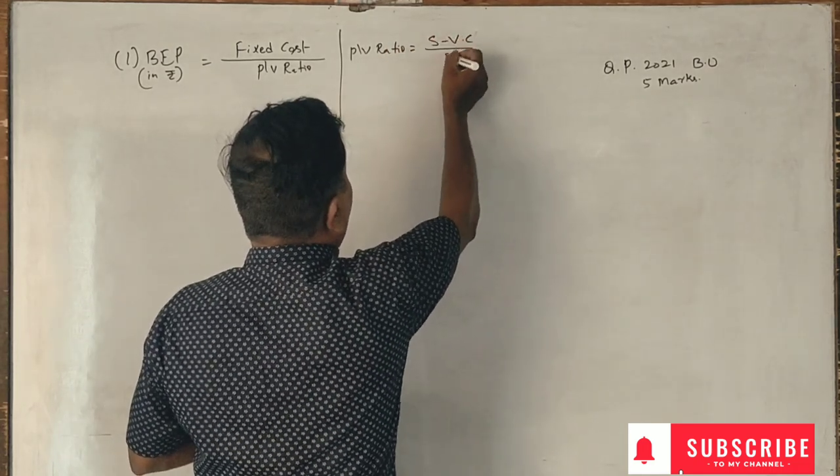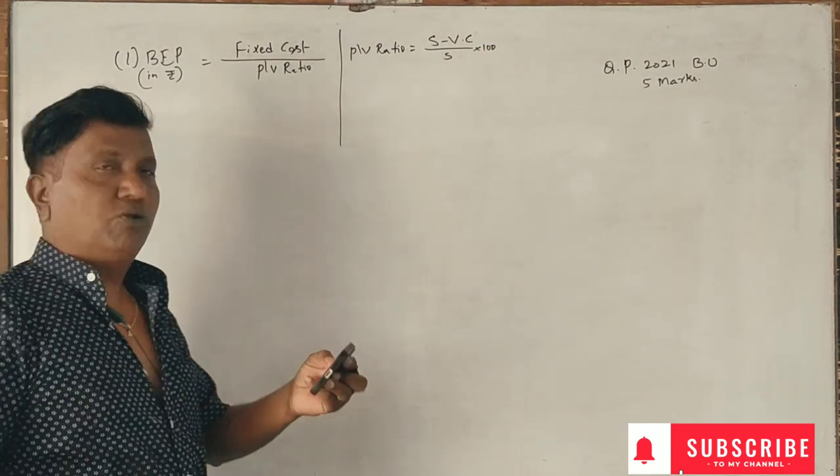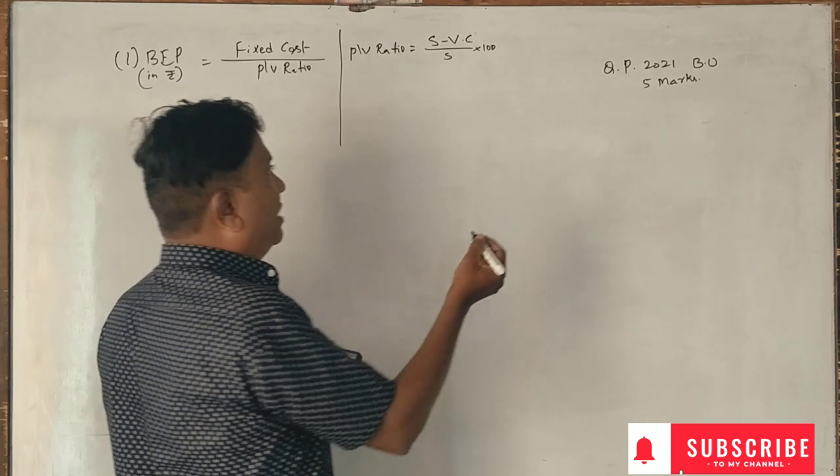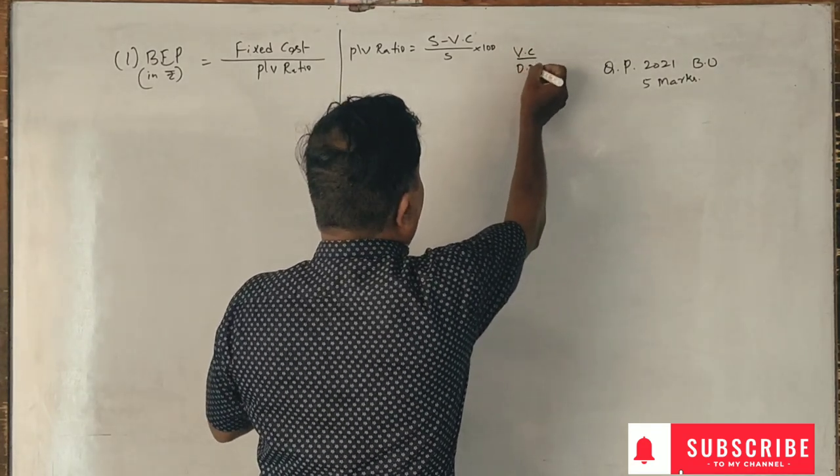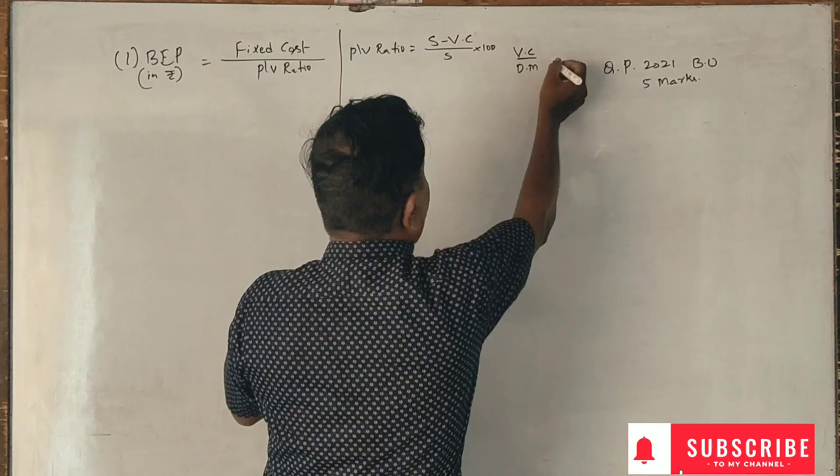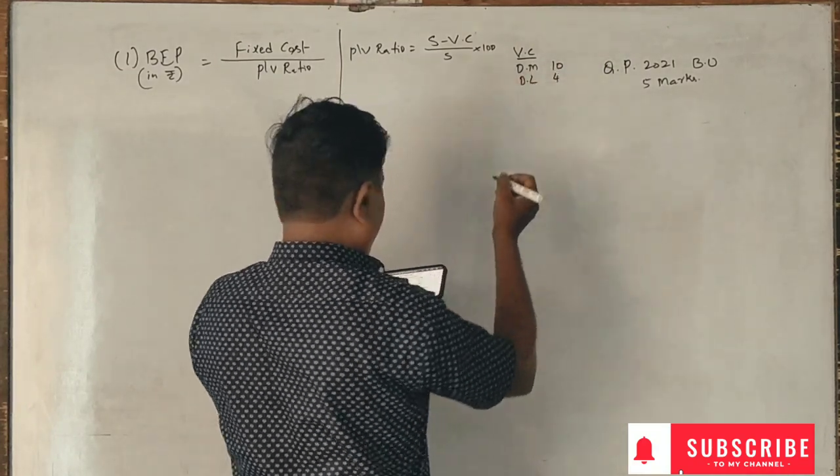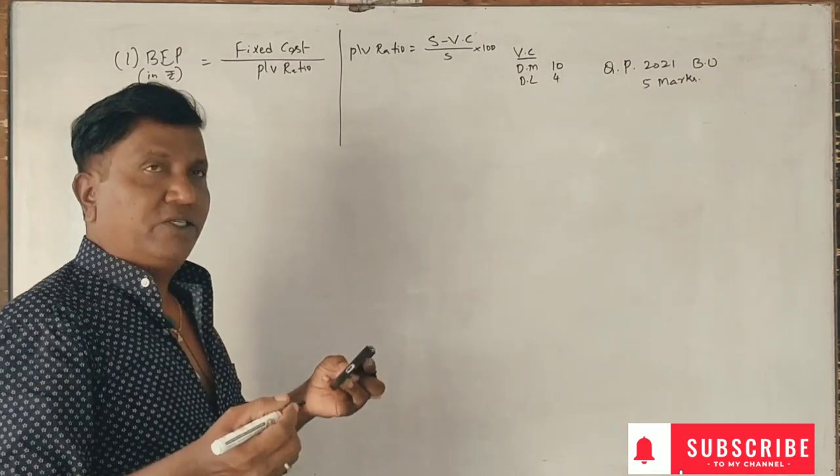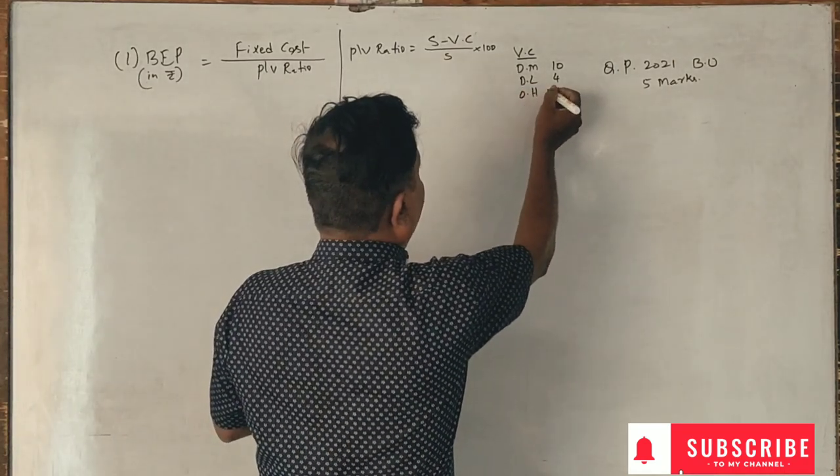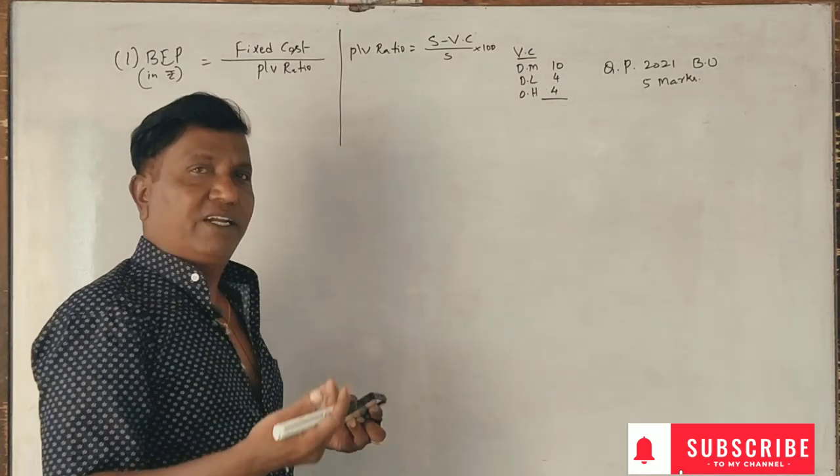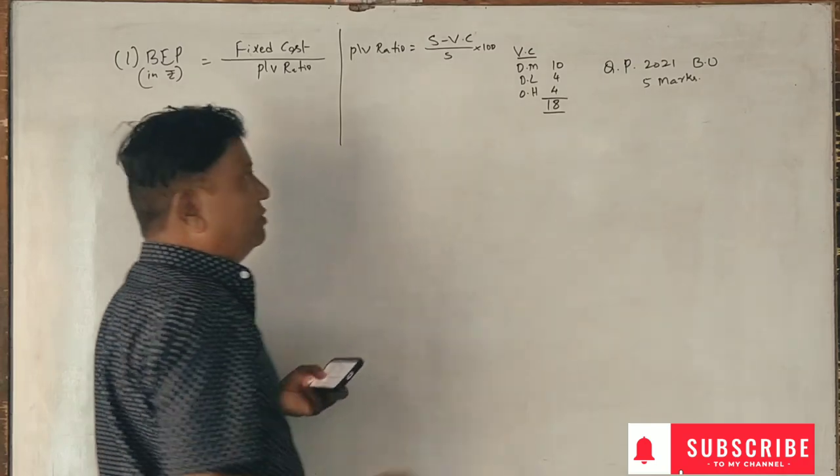So variable cost is equal to 10 rupees, direct labor is 4 rupees, direct overhead is 100% of direct labor which is 4 rupees, and total variable cost is 18 rupees.